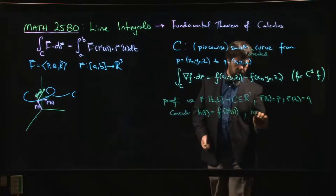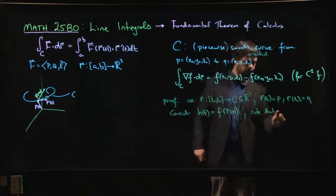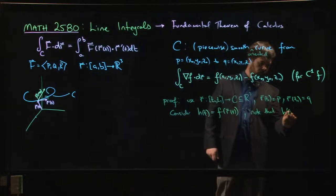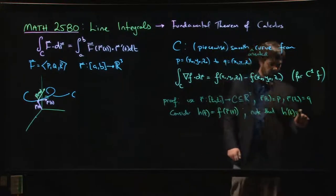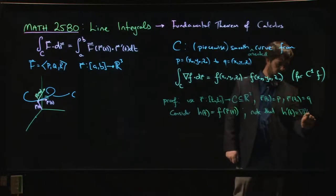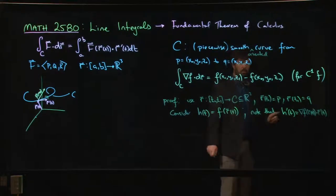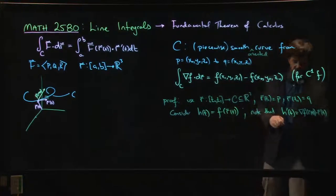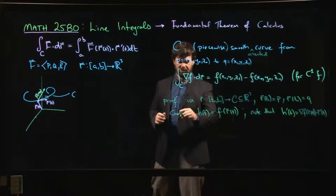And we also know that h prime, by the chain rule, we know that h prime of t is the gradient of f at r of t dotted with r prime of t, which should look familiar. It seems like maybe we're on the right track because, well, what can we do?